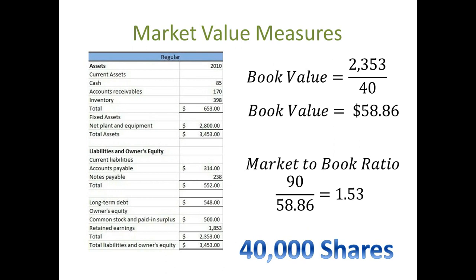A market-to-book ratio of less than 1 implies that the company has not been performing well and investors do not have a lot of faith in the growth of the company. Usually, value investors look for low market-to-book ratios, but this does not always mean that the company's stock is actually at a good value.